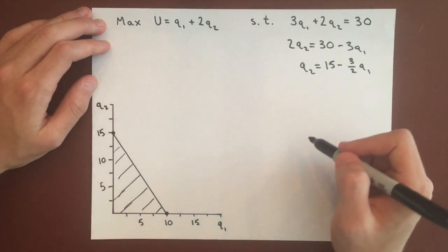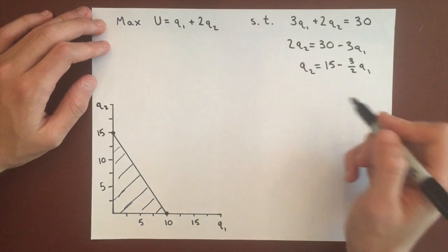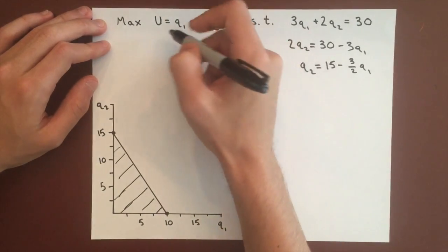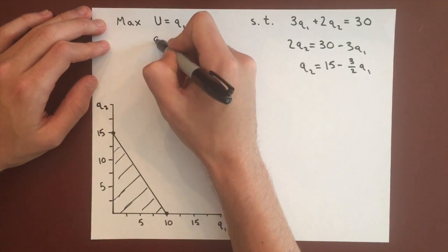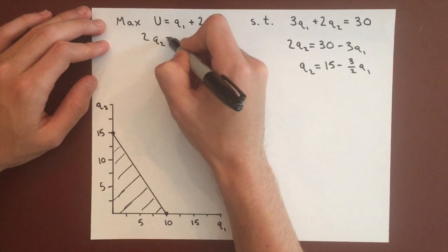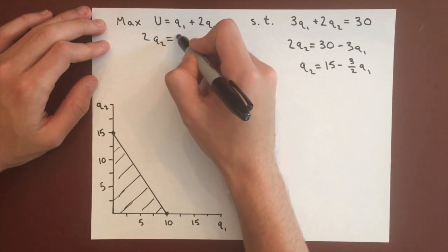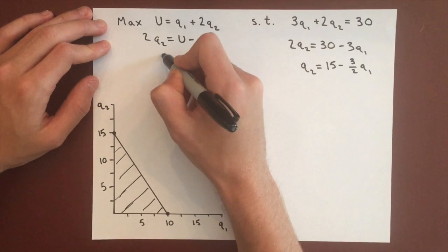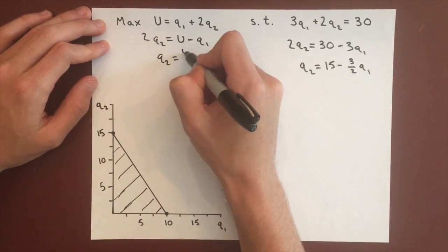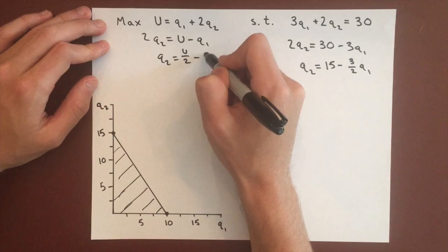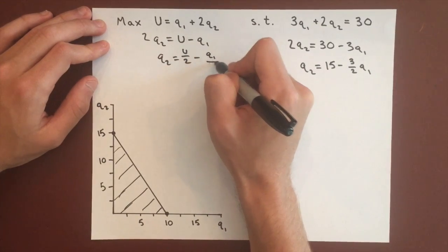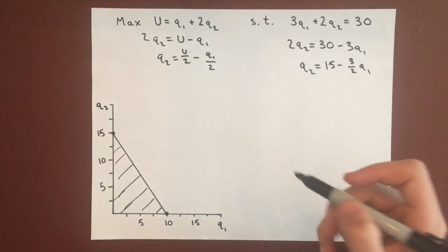We'll solve for Q2 just to make this easier to graph again. Q2 equals U over 2 minus Q1 over 2, and so the slope of this indifference curve is going to be negative 1 half.